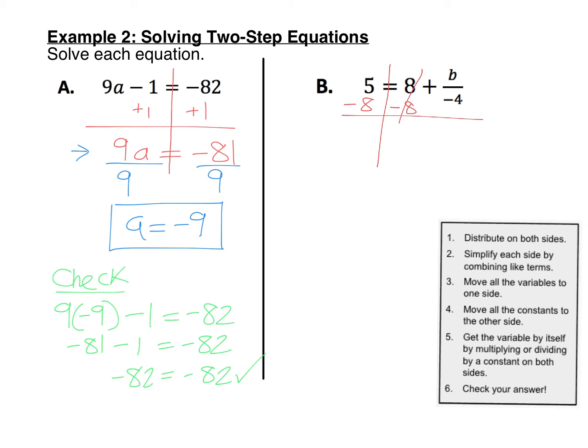When you do that, this is going to cancel out. 5 minus 8 is negative 3. So negative 3 is equal to b divided by negative 4. For my online students in your INB, you don't need to type in this minus 8 part. That's just showing my work. You need to type in this line right here. The negative 3 equals b over negative 4.